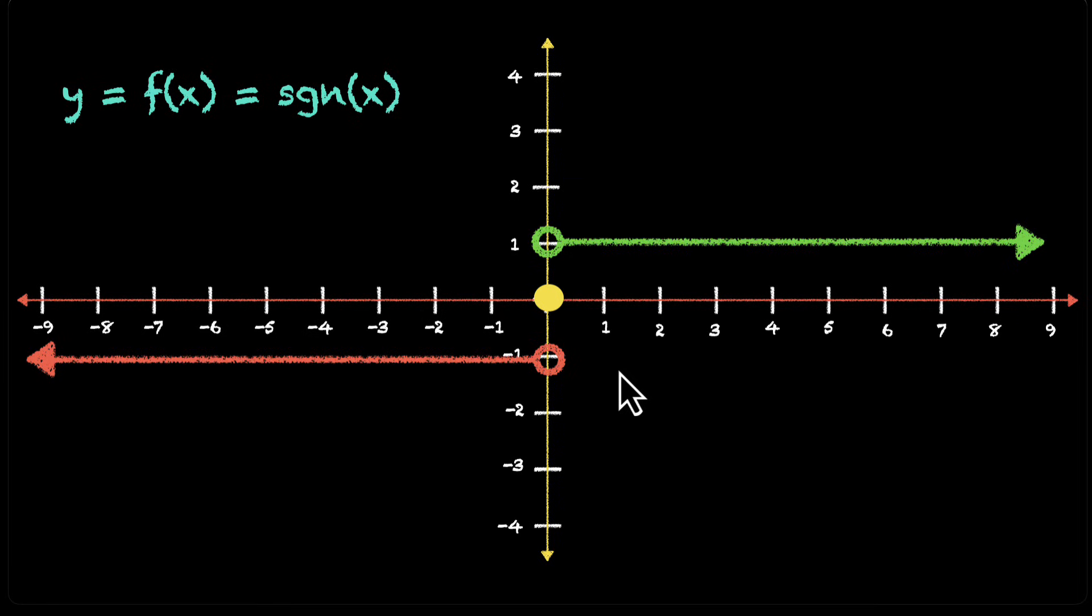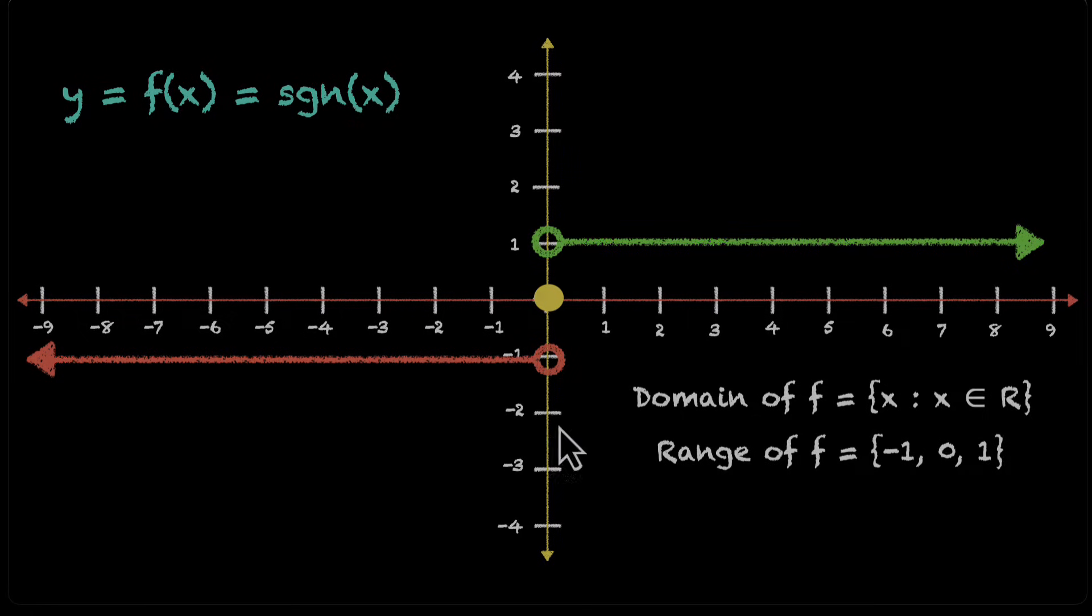What about its domain and range? Can you write that down? So domain is all real values. No matter what you put, you'll get something as an output. But the output is very limited. You only get three outputs, 1, 0, and minus 1. So the range is a set of these three values, that's minus 1, 0, and 1. And this is our signum function.